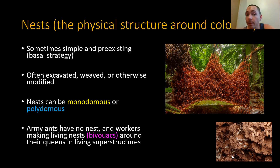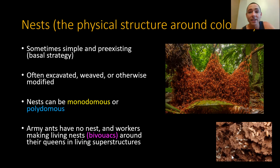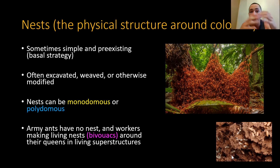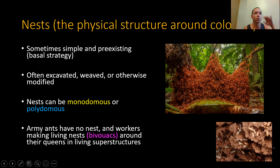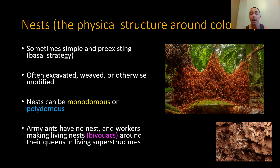Nests are sometimes simple — just a pre-existing crevice in a rock, a hollowed-out acorn, or a rotting twig. Lots of kinds of ants live in just such simple nests, with just one central chamber with an opening where they go in and out, and the rest of the colony organized within this single central chamber. But many nests contain tunnels and subchambers where there is brood, gardens, or food processing, distributing resources across the colony.